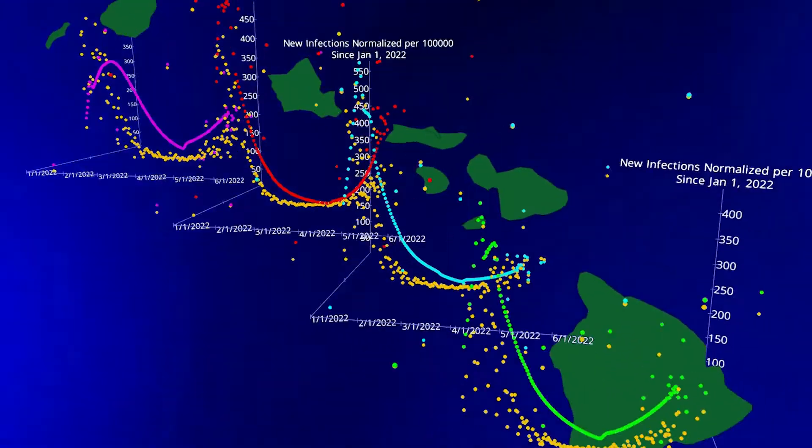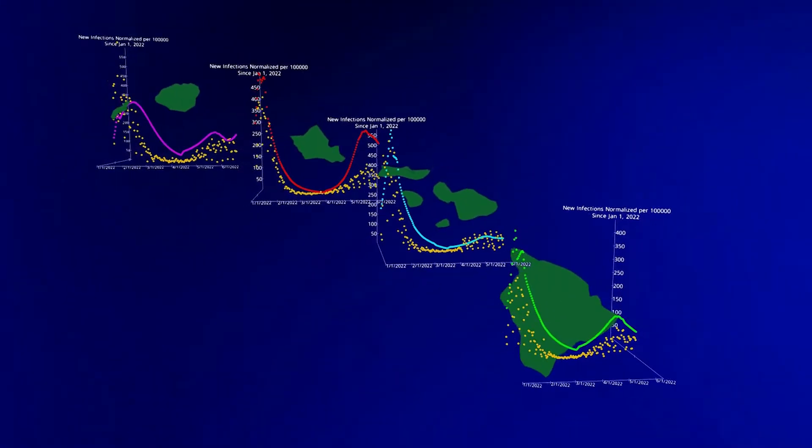This is a representation of the model fit of daily infected cases for each county, normalized by 100,000. The orange dots represent data recorded by the Department of Health.